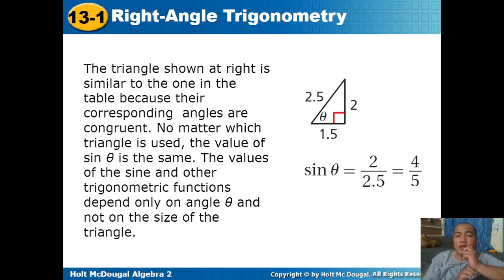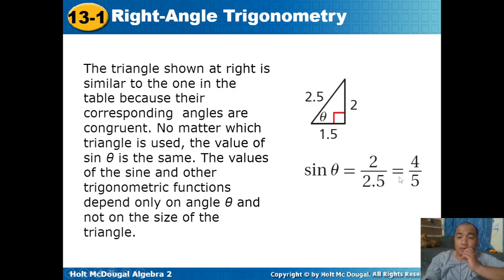The triangle shown is similar to the one in the table because their corresponding angles are congruent. No matter which triangle is used, the value of sine theta is the same. The values of sine and other trigonometric functions depend only on angle theta, not on the size of the triangle. For example, with sides 2, 1.5, and 2.5, sine theta is 2 divided by 2.5, which equals 4 over 5.